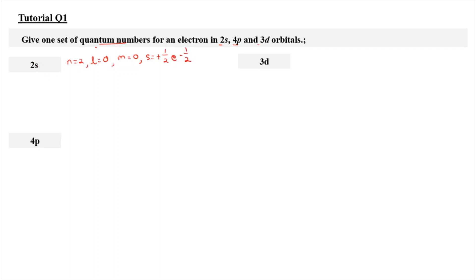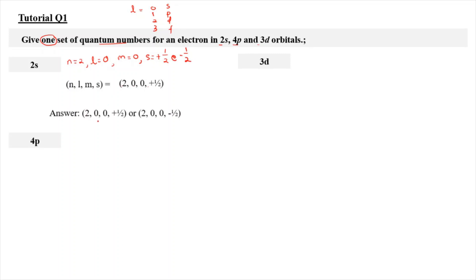Remember the l value: 0, 1, 2, 3 can be represented by letters s, p, d, f. So since it is s, you let l equal to 0. Since we need to give one set, we can say that n, l, m, s is equal to 2, 0, 0, and plus half. So if your answer is either positive or negative half, then you are correct. But if you write both, then you are wrong — you need to choose either one.